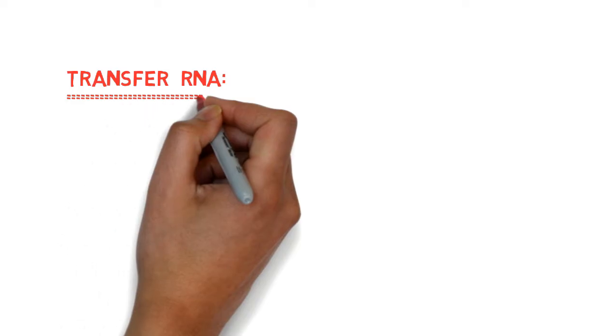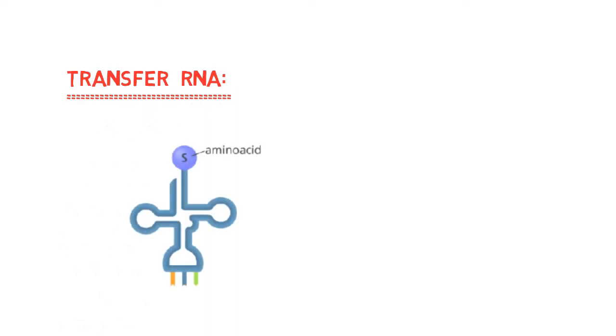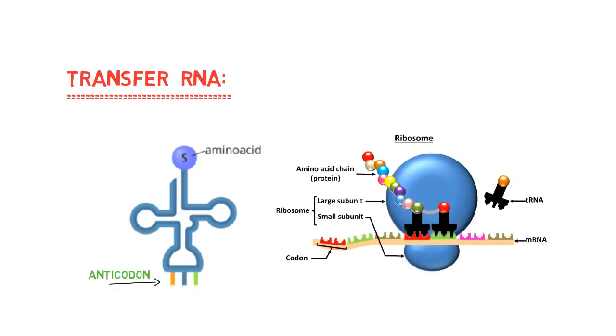The last one is transfer RNA, which has a T-shape and is mainly involved in translation steps. It has an anticodon at its end, which is specific to a particular amino acid. It brings amino acid corresponding to each codon during protein synthesis.